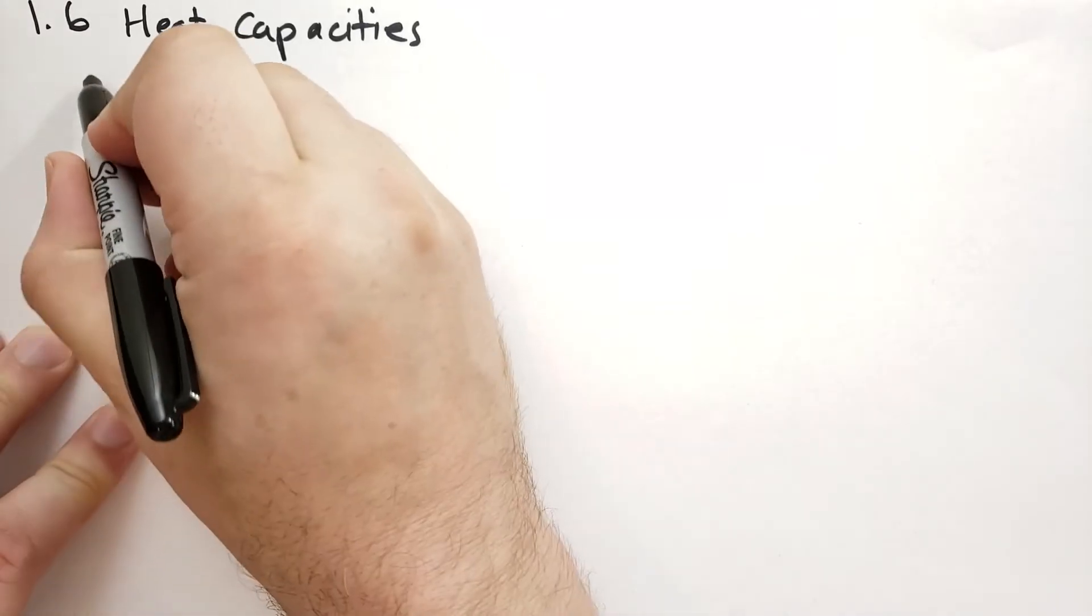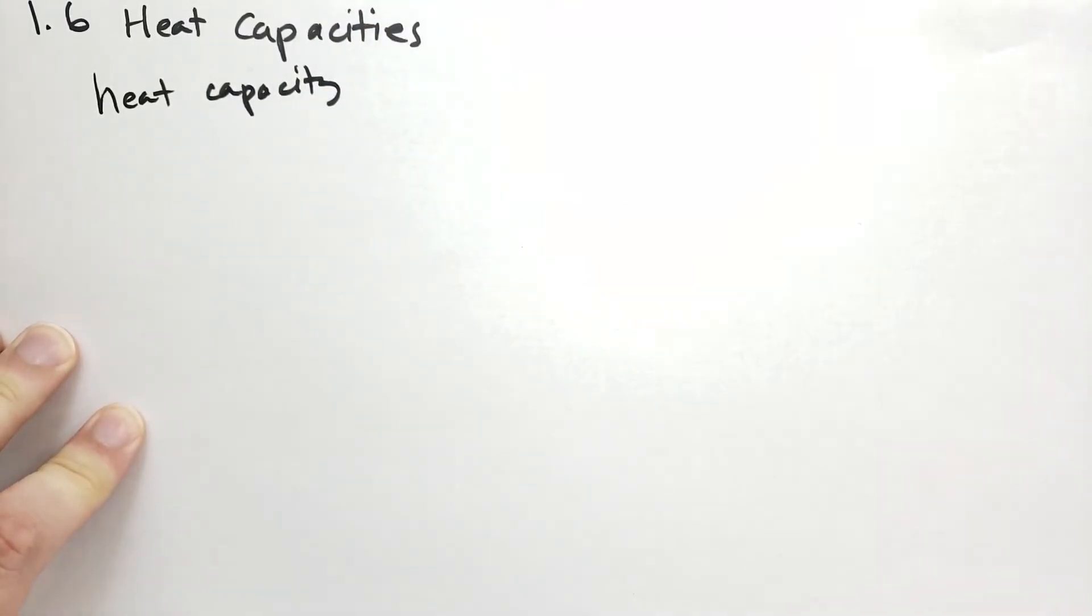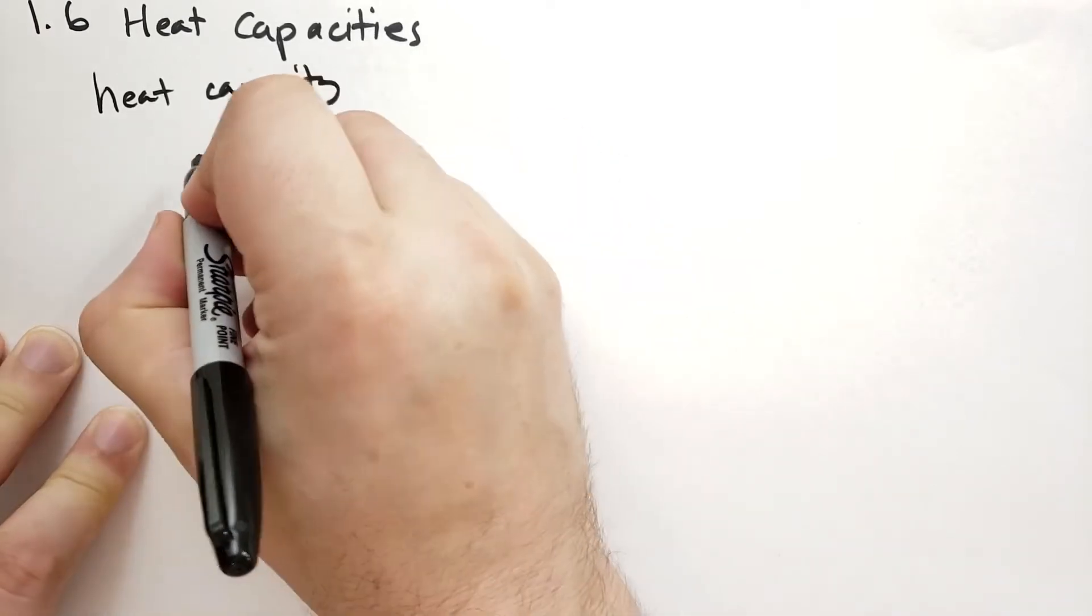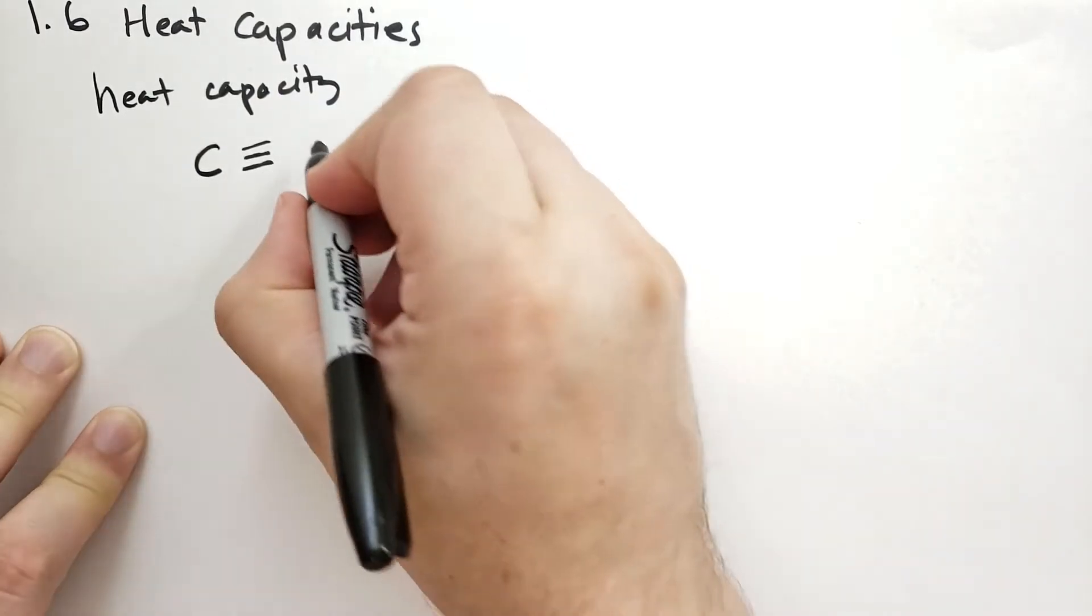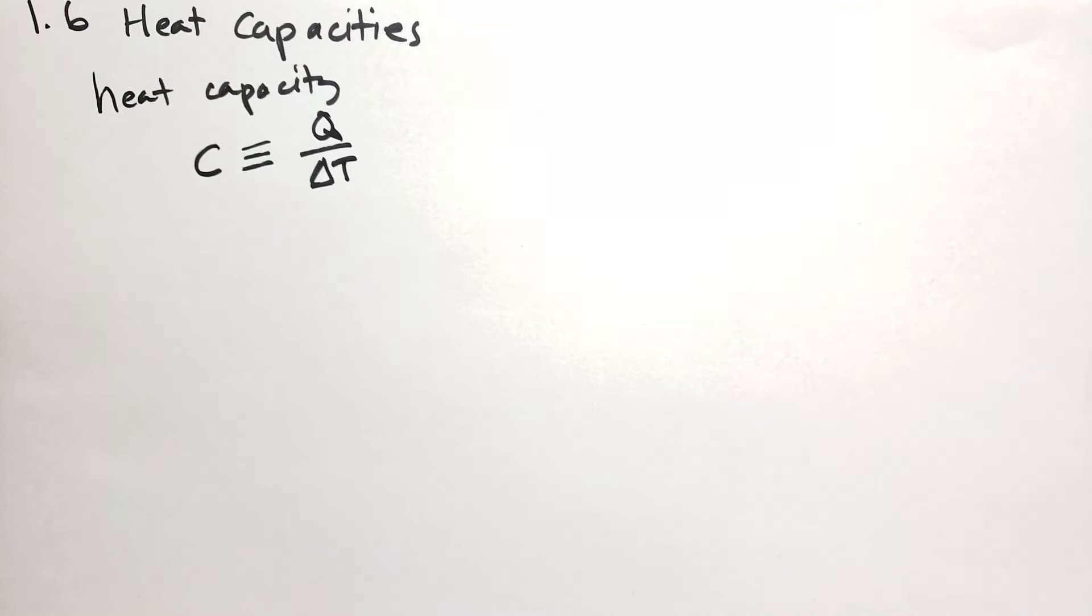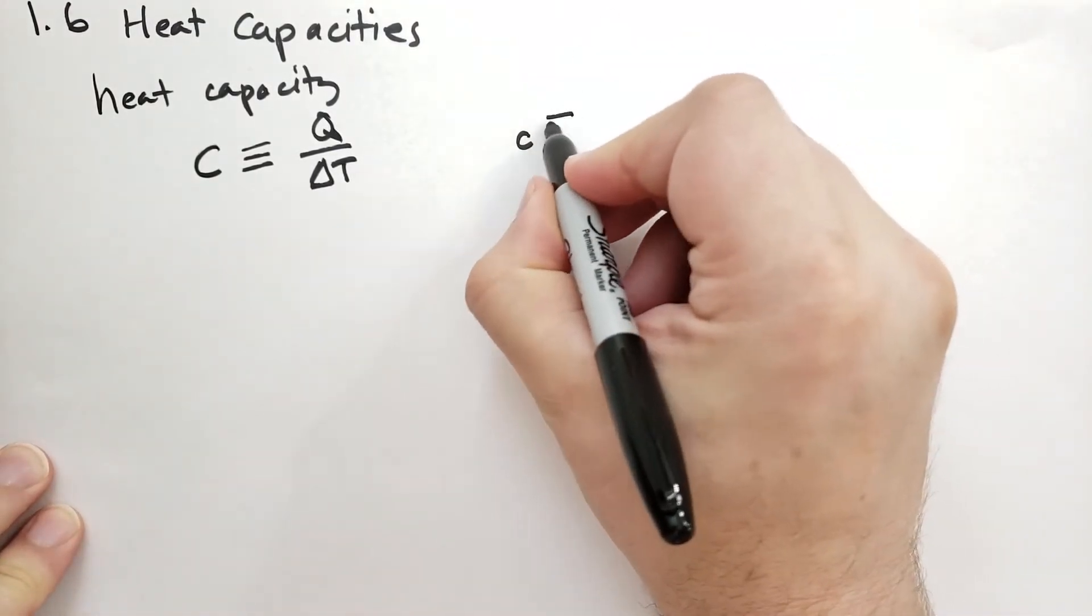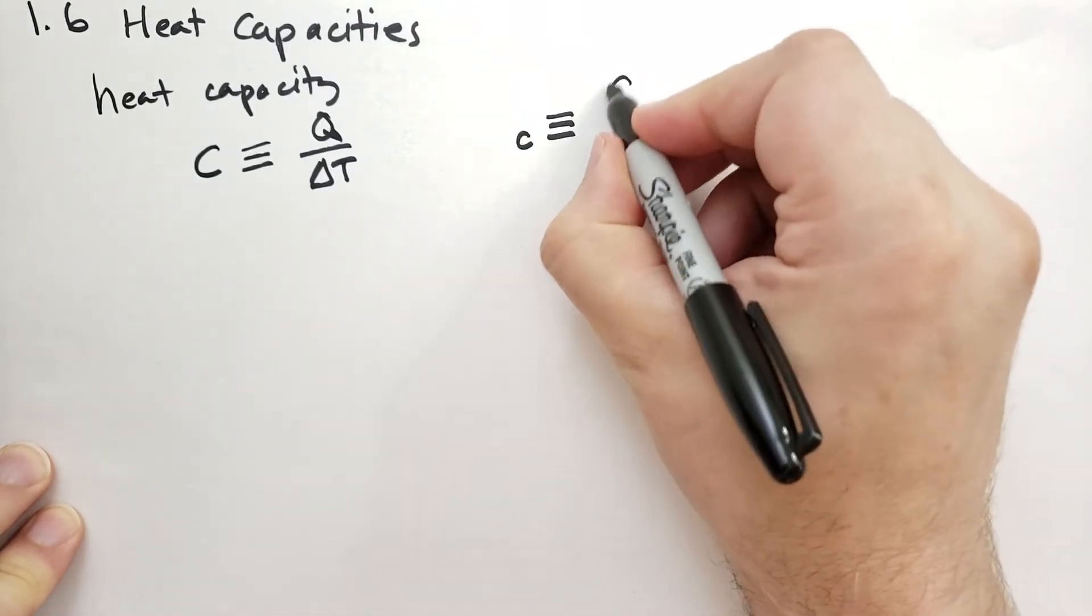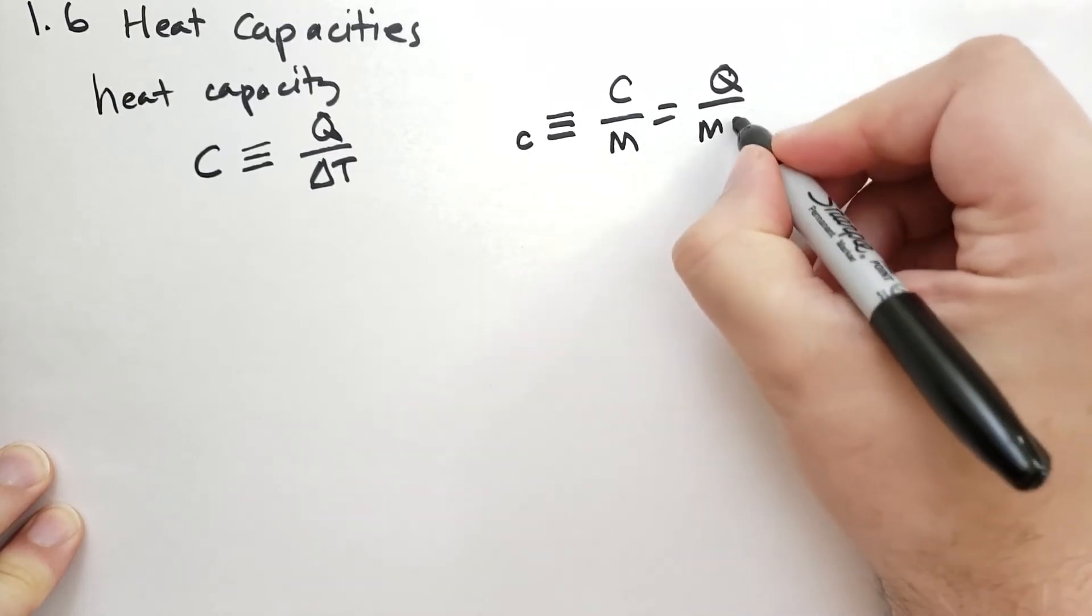So the heat capacity is defined as the amount of heat that is needed to raise the temperature of some object or system. And that's given per degree of temperature. So that's defined to be Q over the change in temperature of that object. Of course, if the object is larger, there's more mass to it, it's going to take more heat to raise its temperature. So we often refer to the specific heat capacity, which is lowercase c, which is defined to be the big uppercase C over the mass M, which we can think of as Q over M and the delta T.